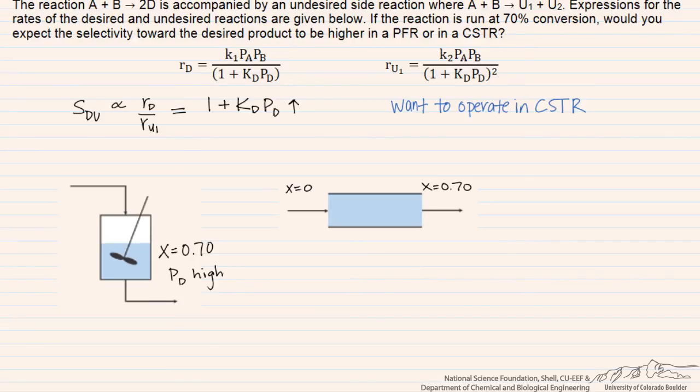And so in the beginning part of the reactor we're not going to have much of the desired product around, and so the selectivity won't be as high as it will when we have done a lot of the reaction and have produced some of our desired product in order to improve the selectivity.